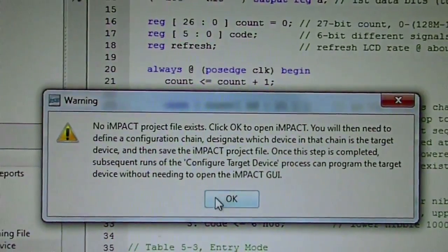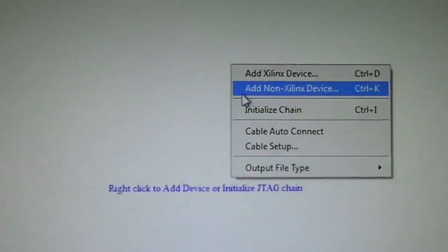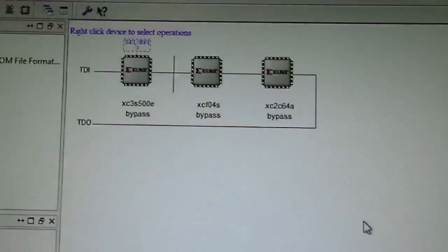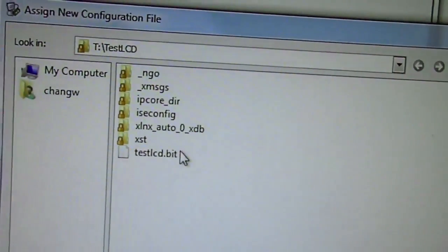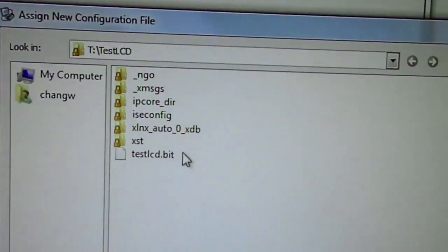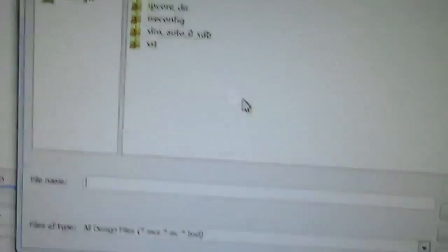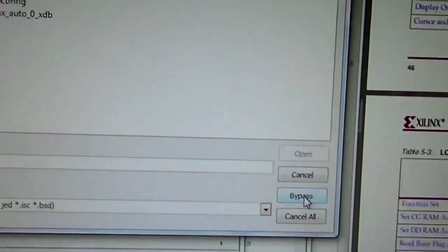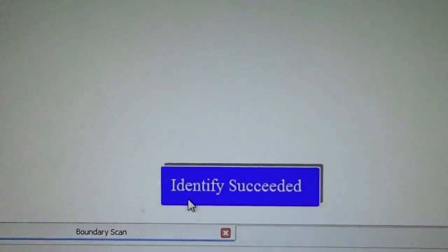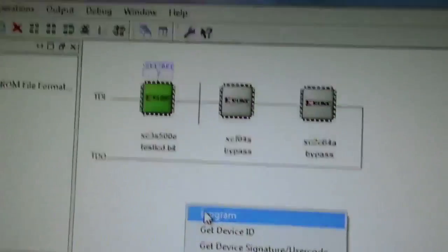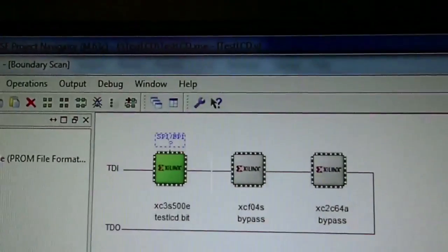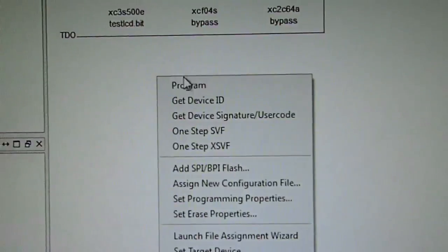This window pops up. We double-click this boundary scan and right-click to initialize the chain. That scans the board to find three chips. Double-click on the test LCD—that will be the file. They ask for SPI or BPI, prompt no, and bypass this and another bypass. Then right-click on the chip and select program. You see the first chip becomes green. Once you click on program, this board will load the program.